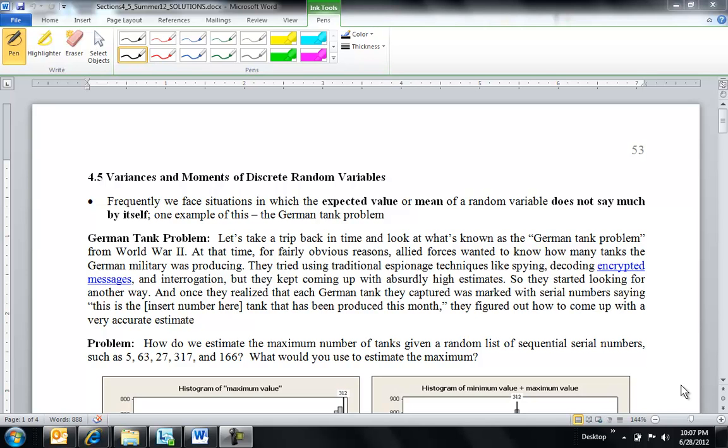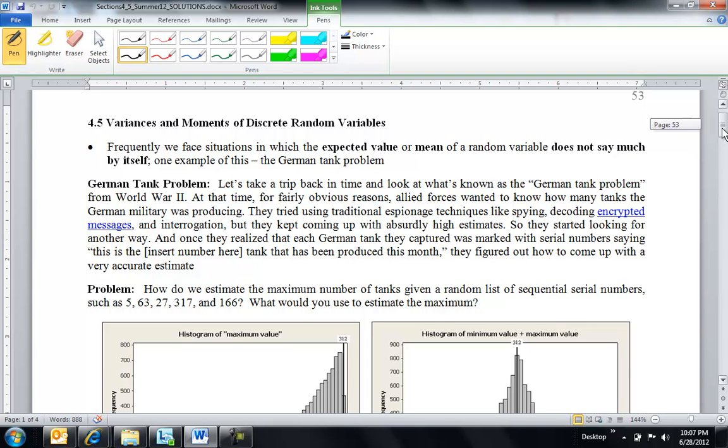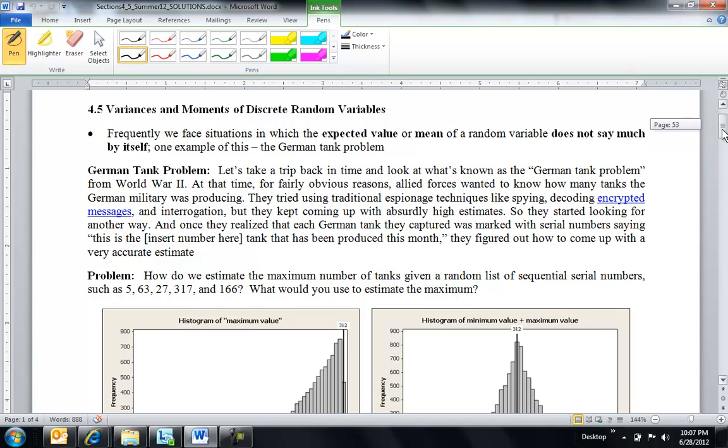Hi, we're in section 4.5. You just learned about expected value, and that's the mean of a random variable. And 4.5 is mostly about the variance, which is the amount of spread a random variable has about its mean.